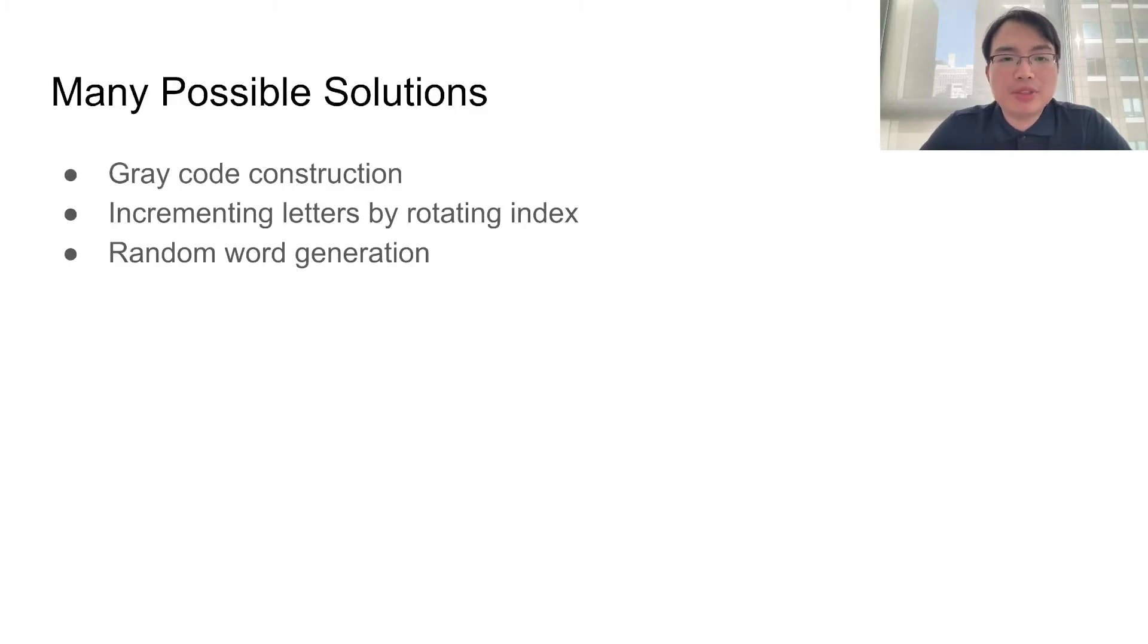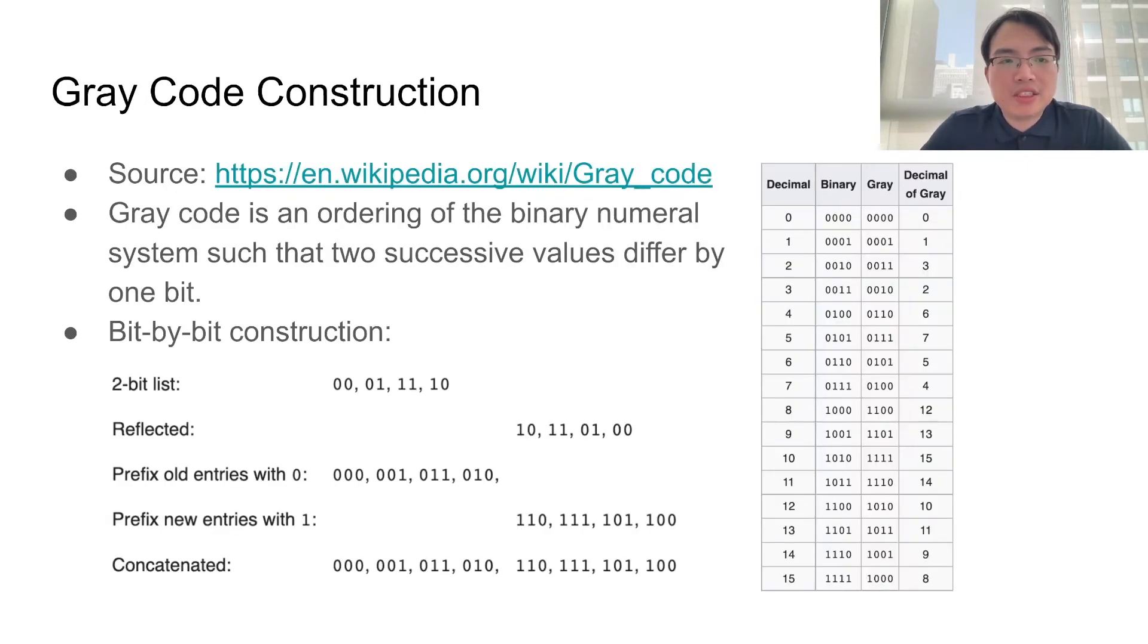There are many possible solutions to this problem. Here, we will go over three types of solutions. The first type is based on the idea of gray code construction. Gray code is an ordering of the binary numeral system, such that two successive values differ by exactly one bit. This is almost the same definition as our word ladder definition, except that we are using letters and gray code is using bits.